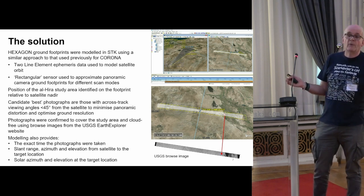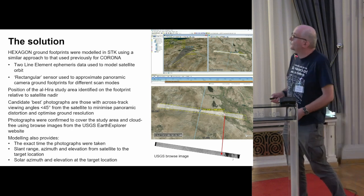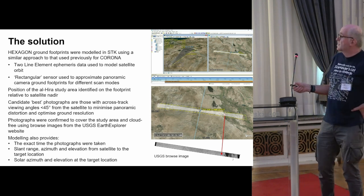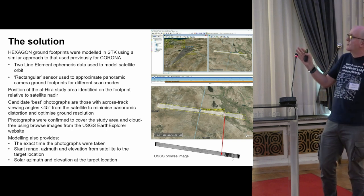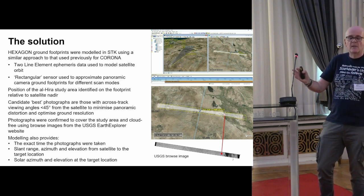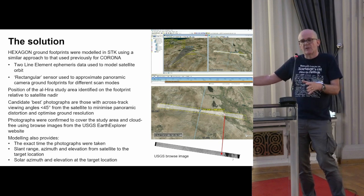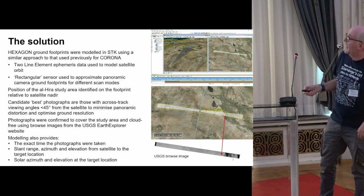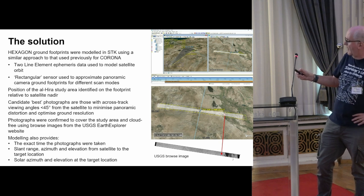The solution I adopted was to model the orbits of the satellite using a freeware version of a commercial package called STK — which I had successfully used with Corona. Using freely available two-line elements, the historical ephemeris of the satellite, and applying Kepler's laws, you can work out in time and space where the satellite was. Then using a rectangular sensor to represent the footprint, we can model it.